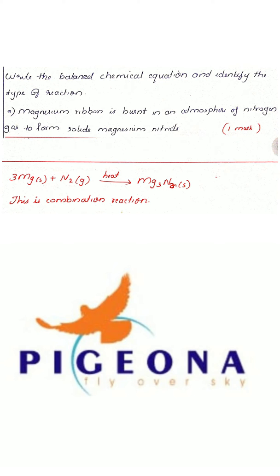The question asks us to write the balanced chemical equation when magnesium ribbon is burnt in an atmosphere of nitrogen gas to form solid magnesium nitride. Since magnesium ribbon is solid, we write Mg(s). Writing the states is very important when writing equations. Nitrogen is in the gas state, so we write N₂(g).